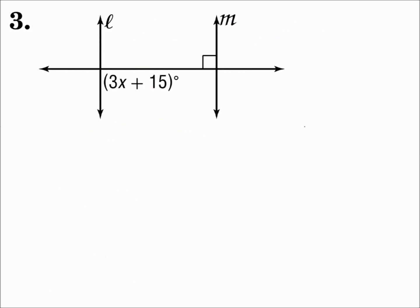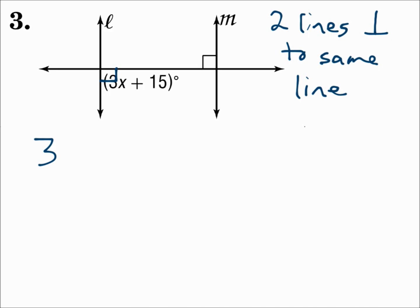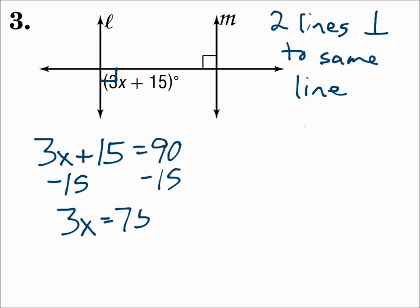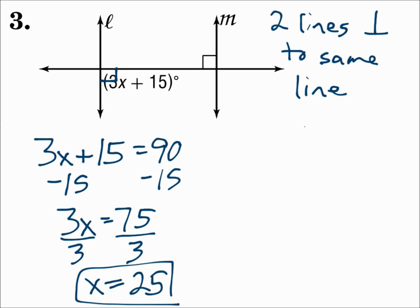Number three. Line M is perpendicular to the horizontal line. If line L is also perpendicular to the horizontal line, then L and M are parallel. So that means that angle has to be a right angle. The rule says if two lines are perpendicular to the same line, then they're parallel. So 3X plus 15 has to equal 90. Subtract 15 from each side and divide both sides by 3. X is 25. Two lines that are perpendicular to the same line are parallel.